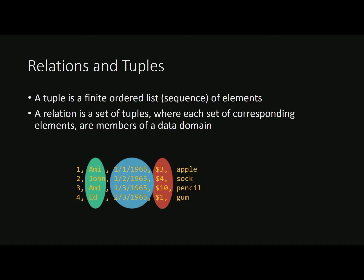The two main concepts in the relational model are relations and tuples. A tuple is just a sequence of elements, which you may know from other programming languages. Taking the same data from the flat file, we make it a relation by grouping every set of corresponding elements into a data domain — for example, the green data domain for customer name. Once grouped into a domain, we can start enforcing rules: customer name can only have alphabetic characters, no numerals; date can only have numerals and special characters like slash, and must be in range from when the business started to the current day.